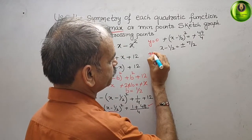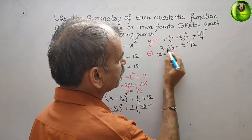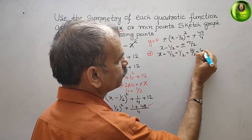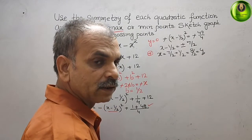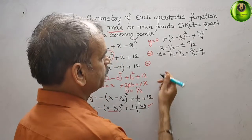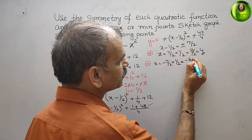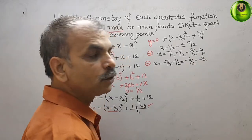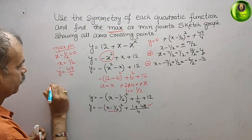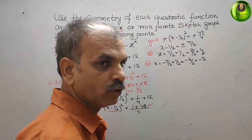For the positive case: x equals 7 by 2 plus 1 by 2, which equals 8 by 2, that is x equals 4. For the negative case: x equals minus 7 by 2 plus 1 by 2, which equals minus 6 by 2, that is x equals minus 3. So the two x-intercept coordinates are minus 3 comma 0 and 4 comma 0.